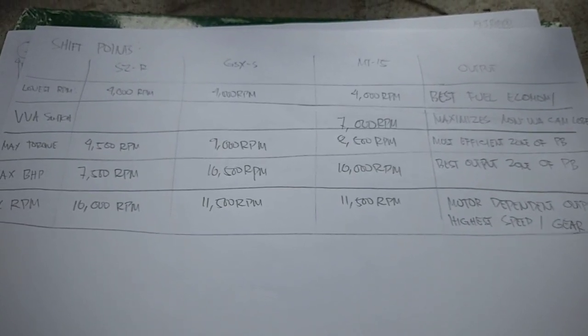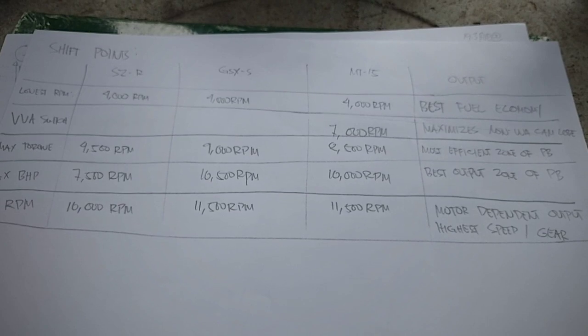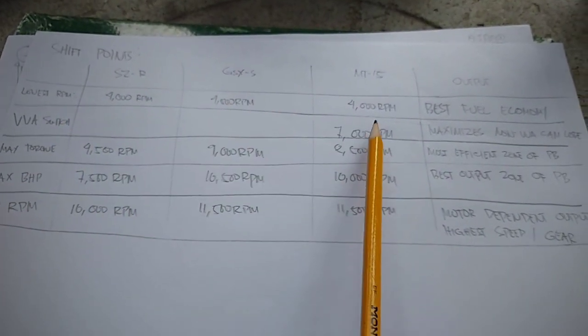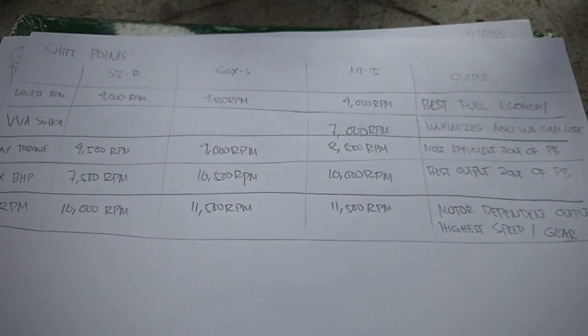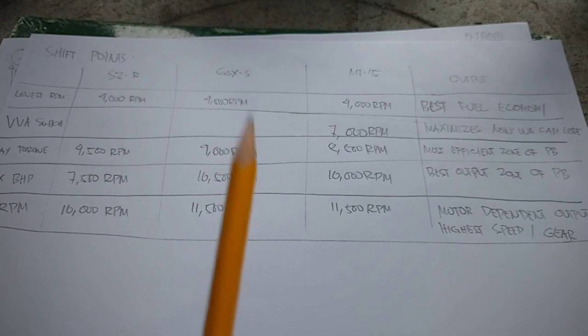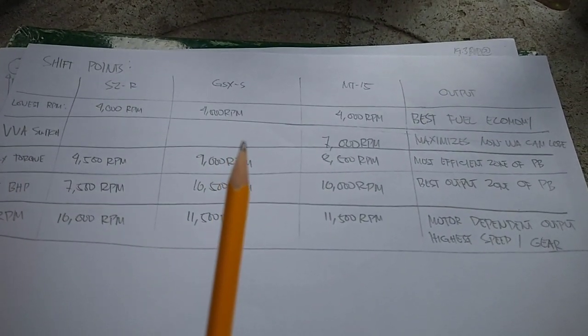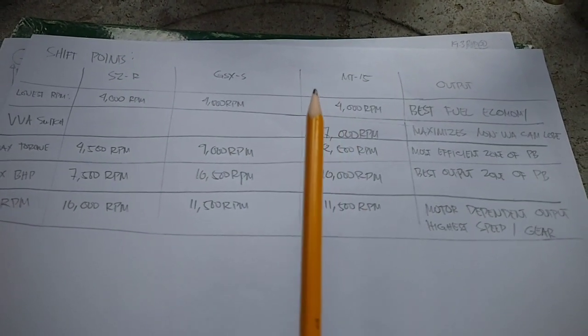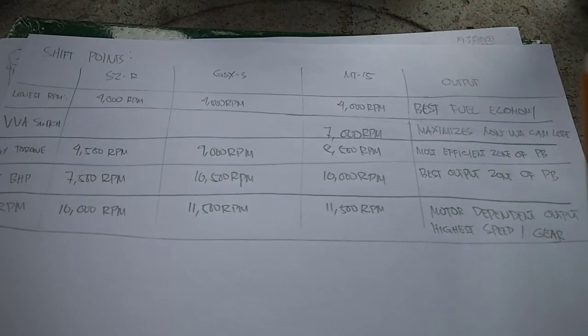First and foremost, kailangan natin matutunan yung lowest RPM kung kailan tayo pwede mag-shift. So sa lahat ng motor, it's always 4,000 RPM. Below 4,000 RPM, pwede magkaroon ng ping or pre-detonation kasi masyadong mababa yung RPM. And secondly, 4,000 RPM ang ideal na i-maintain na RPM kasi it is the best for fuel economy.